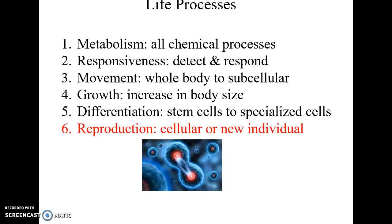The six main life processes begin with metabolism — all the chemical processes occurring in the body. Responsiveness is the ability to detect what's going on in the external or internal environment and respond to it. Movement includes moving the entire body, moving parts of the body, moving things inside the body such as blood, and even movement of things inside cells.